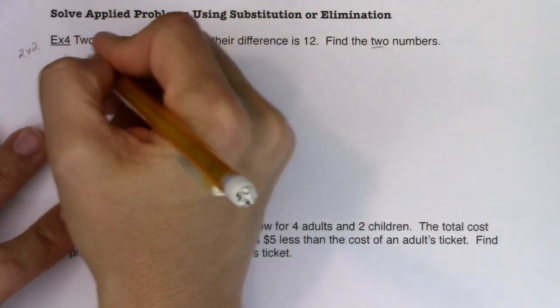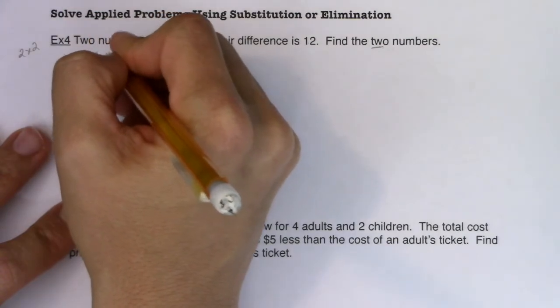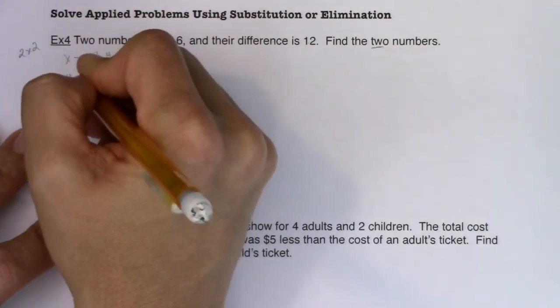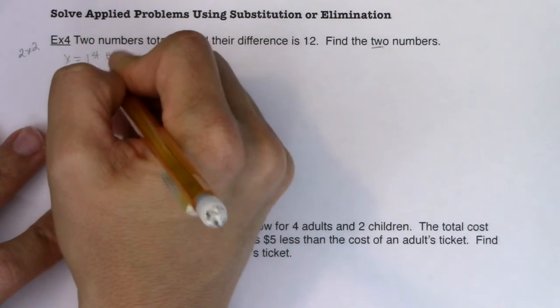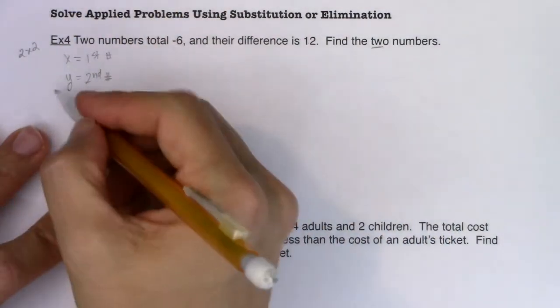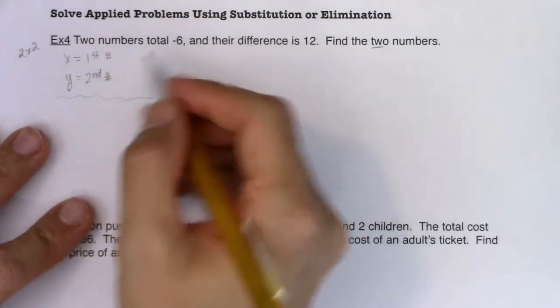I'll call X my first number and Y my second number. So I've got my two variables. Let's see what my two equations can be.